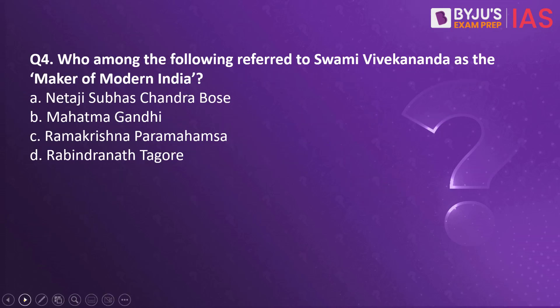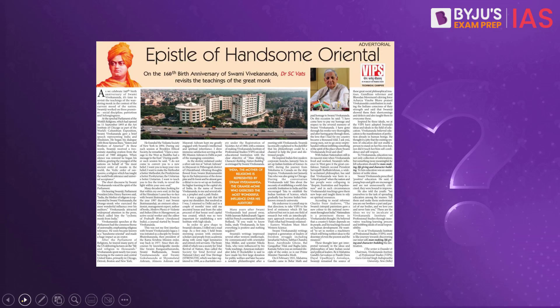Moving on to question number 4. Who among the following referred to Swami Vivekananda as the 'maker of modern India'? Option A - Netaji Subhash Chandra Bose; Option B - Mahatma Gandhi; Option C - Ramakrishna Paramahamsa; Option D - Rabindranath Tagore. The context: an article in the Indian Express today talks about the 160th birth anniversary of Swami Vivekananda. National Youth Day is observed on January 12th to commemorate his birth anniversary.